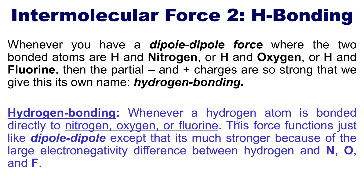Hydrogen bonding functions just like dipole-dipole conceptually — there's a strong partial minus on one atom and a strong partial positive on the hydrogen — except it's so much stronger because of the larger electronegativity differences between hydrogen and nitrogen, oxygen, and fluorine. Even though conceptually it functions just like dipole-dipole, we give it its own name because it's so much stronger: hydrogen bonding.